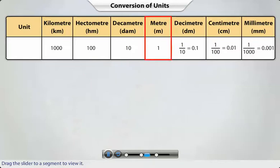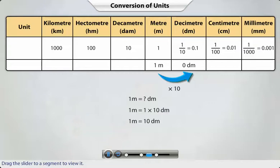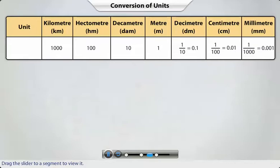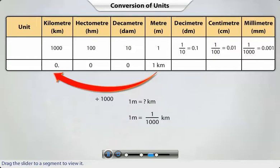The meter is the most commonly used unit of measuring length. To convert meters to decimeters, we multiply the unit by ten, since the decimeter column is one place to the right of the meter column. To convert meters to kilometers, we divide the unit by thousand, since the kilometer column is three places to the left of the meter column.